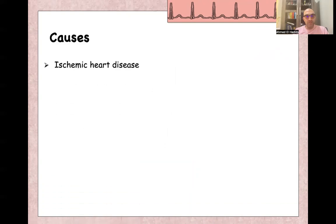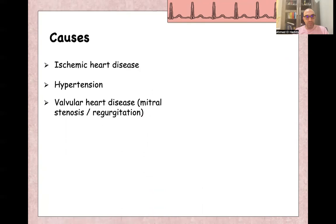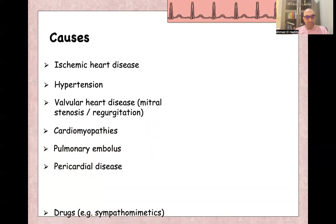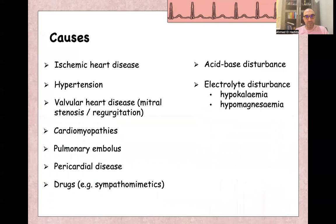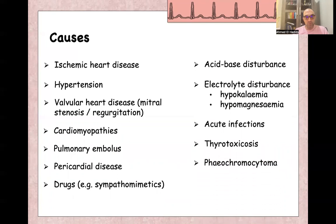There are many causes for atrial fibrillation like ischemic heart disease, hypertension, valvular heart disease like mitral stenosis and mitral regurgitation — very common. Also cardiomyopathy, pulmonary embolism, pericardial disease, and drugs like sympathomimetics. Acid-base disturbance and electrolyte disturbance like hypokalemia and hypomagnesemia, acute infections, thyrotoxicosis, pheochromocytoma, and excess alcohol.